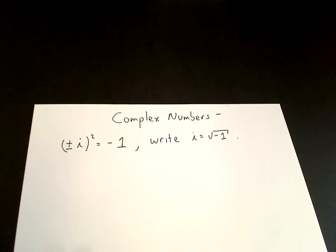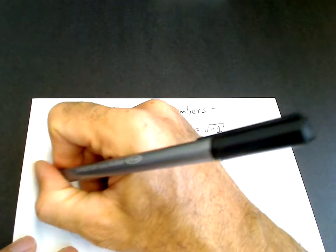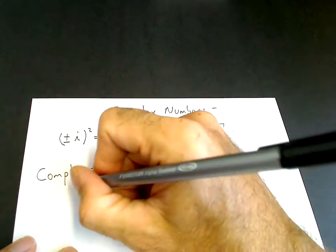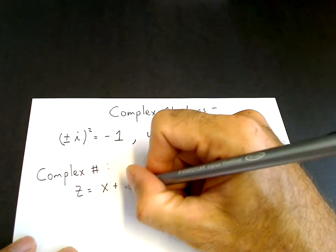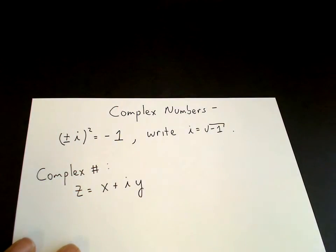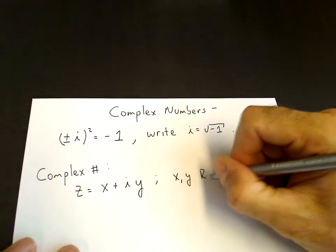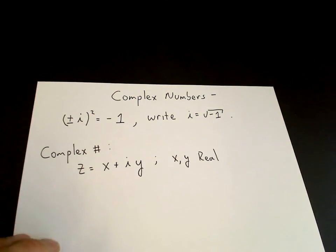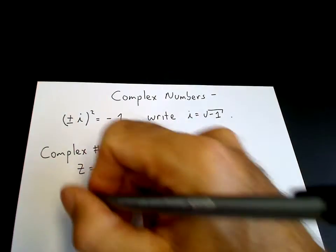If we use i as a number, we can introduce a complex number, z, which is a real number x plus i times another real number y, where x and y are real. This introduces a whole other set of numbers called complex numbers, and there are two parts to a complex number.